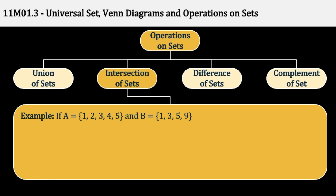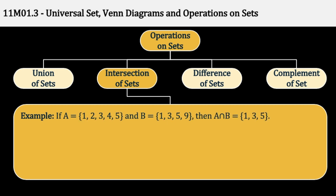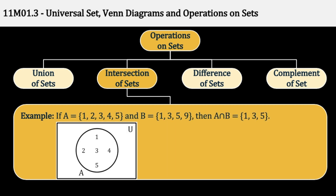Example: A अगर {1, 2, 3, 4, 5} है, B {1, 3, 5, 9} है, तो A Intersection B हो गया {1, 3, 5}.